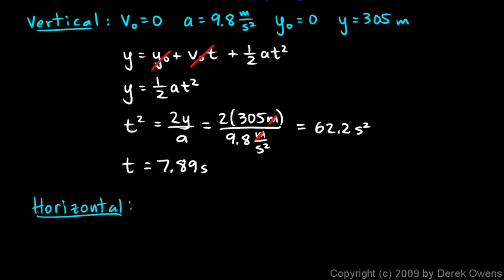Okay, and horizontally we know that the initial velocity, what we found just a second ago, is 89.4 meters per second. And horizontally the acceleration is 0. And we know the time is 7.89 seconds, what we found from the vertical motion. And we know that the initial position is 0.